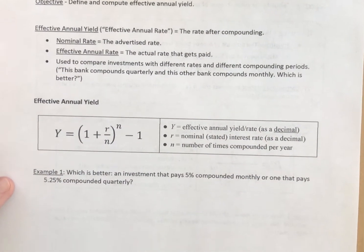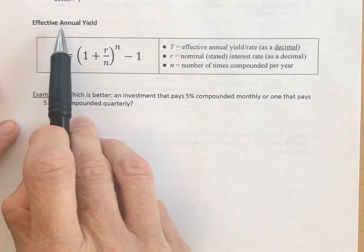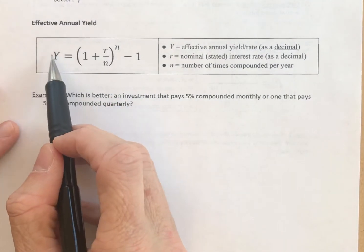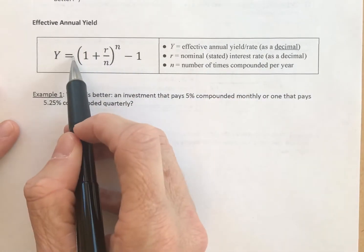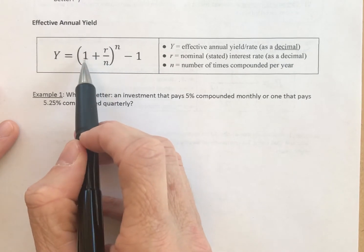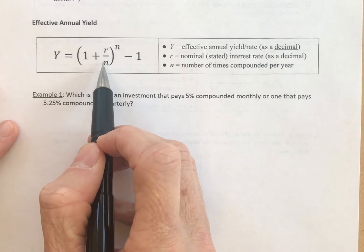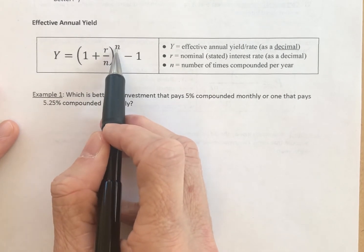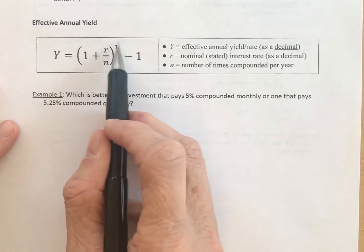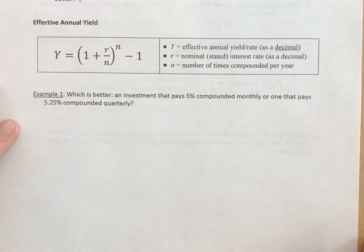As usual, we're going to make use of the formula, and here is the formula for the effective annual yield. The effective annual yield, or the rate, which will come out as a decimal, is a fairly simple formula. It's the sum of 1 plus the rate as a decimal, divided by the number of times compounded per year, that sum raised to the number of times compounded per year, and then subtract 1 from this whole calculation. Let's see an example.